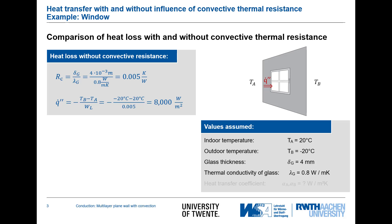This is an incredibly high value and not what we would expect. A typical home boiler produces about 25 kilowatts for heating the whole house, meaning we would lose all of that heat through just two or three square meters of window. Something is wrong — and what is wrong is that we are still not accounting for convection in the room and convection outside.